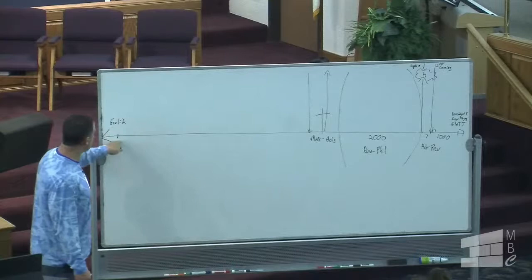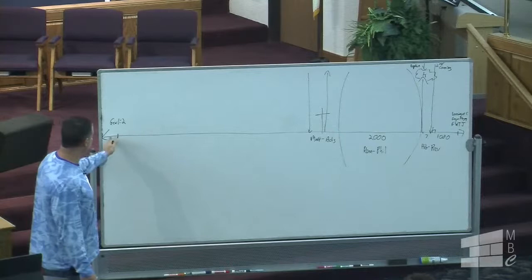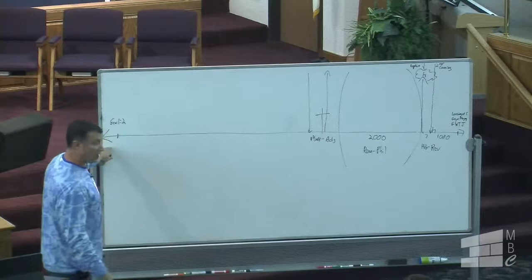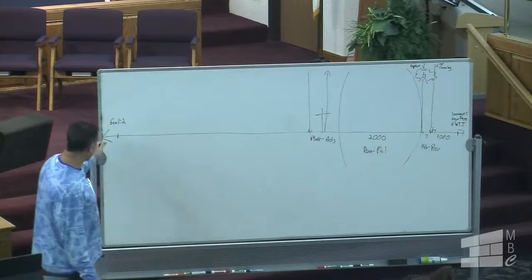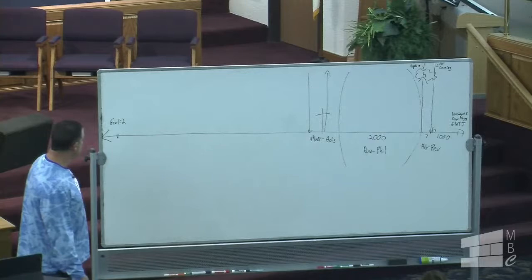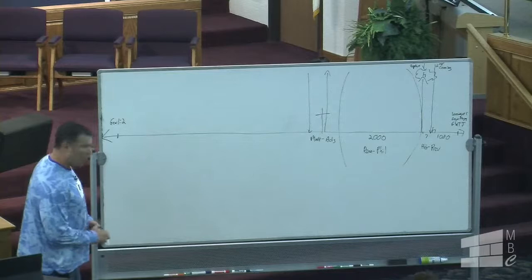We've done a timeline before showing events way back here. If we shift it over, we talked about the creation of Lucifer the archangel, the creation of all the angels, the creation of the earth according to Job chapter 38, the fall of the angels, the rebellion, the creation of hell, and then the destruction of the earth. That's why you have the earth without form and void and darkness upon the face of the deep — it's a giant mud ball. When you look at Job 38 where the earth is actually created...